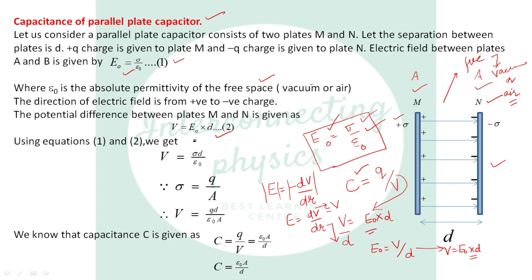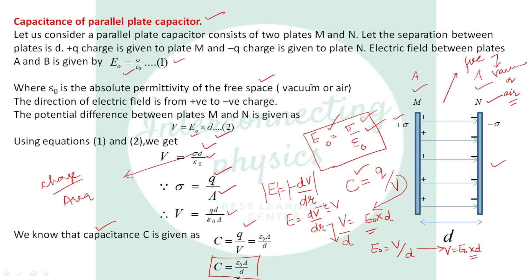Using E₀ equal to sigma over epsilon₀, we get V equal to sigma·D over epsilon₀. Since surface charge density sigma equals charge Q divided by area A, substituting gives the potential difference between the two plates equal to Q·D over epsilon₀·A. Now calculating capacitance: C equals Q over V, which gives C equal to epsilon₀·A divided by D. The Q cancels with Q, so the capacitance of a parallel plate capacitor is epsilon₀·A divided by D.